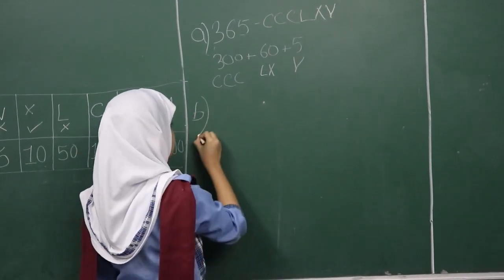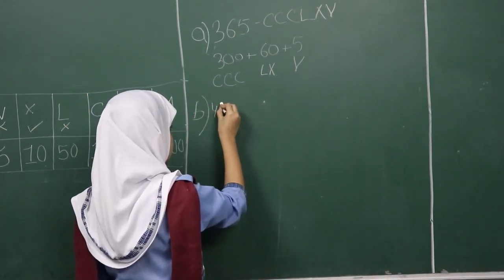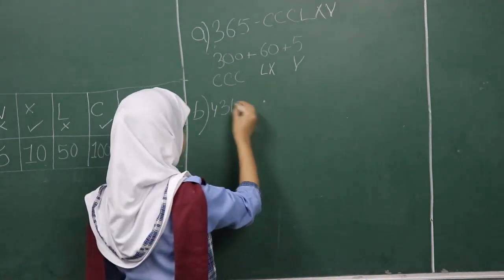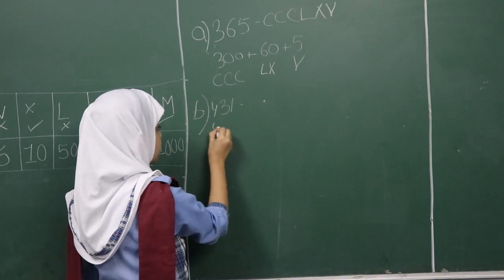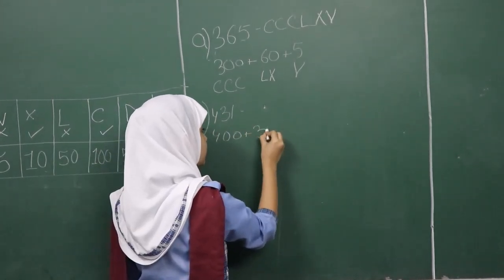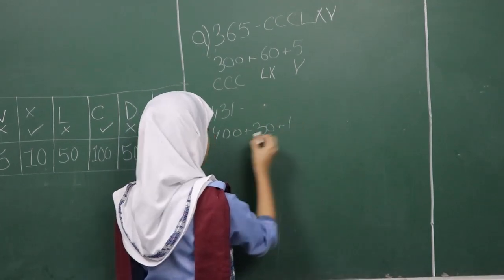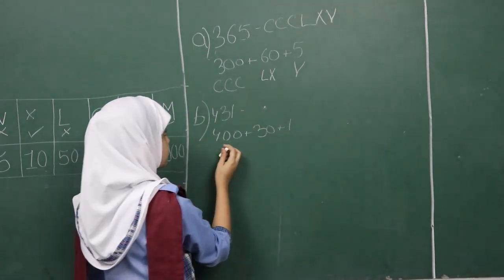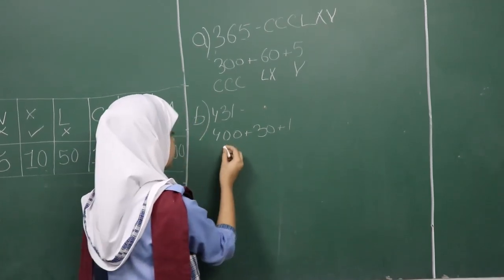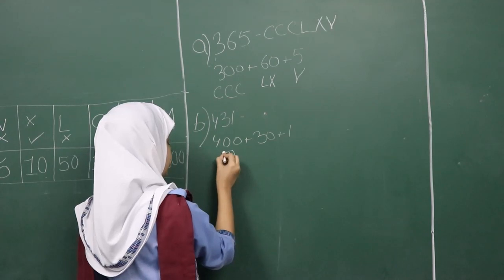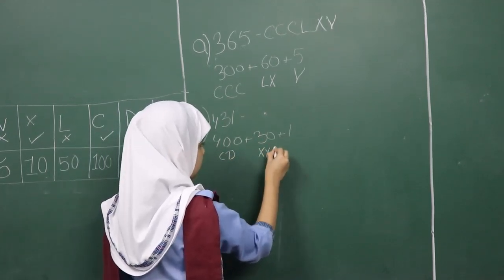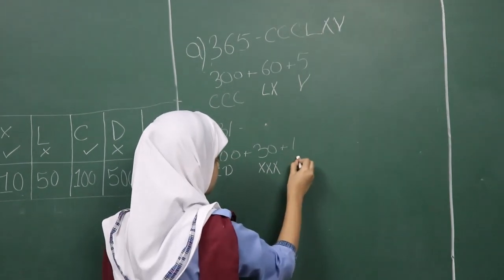Let's take one more example: four hundred plus thirty plus one. Four hundred — since any number cannot be repeated more than three times, we will write CD. Thirty is XXX. And one is I. So we write CDXXXI.